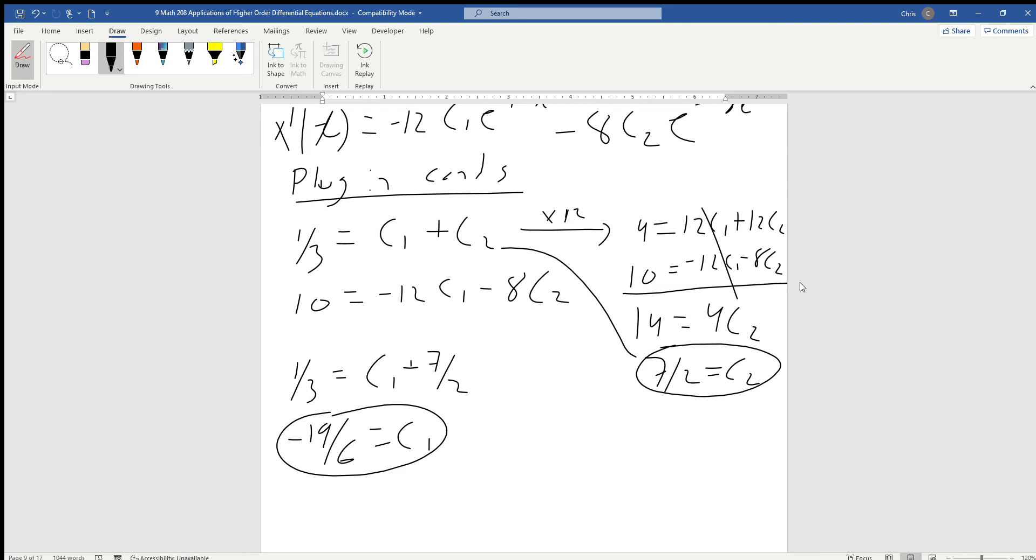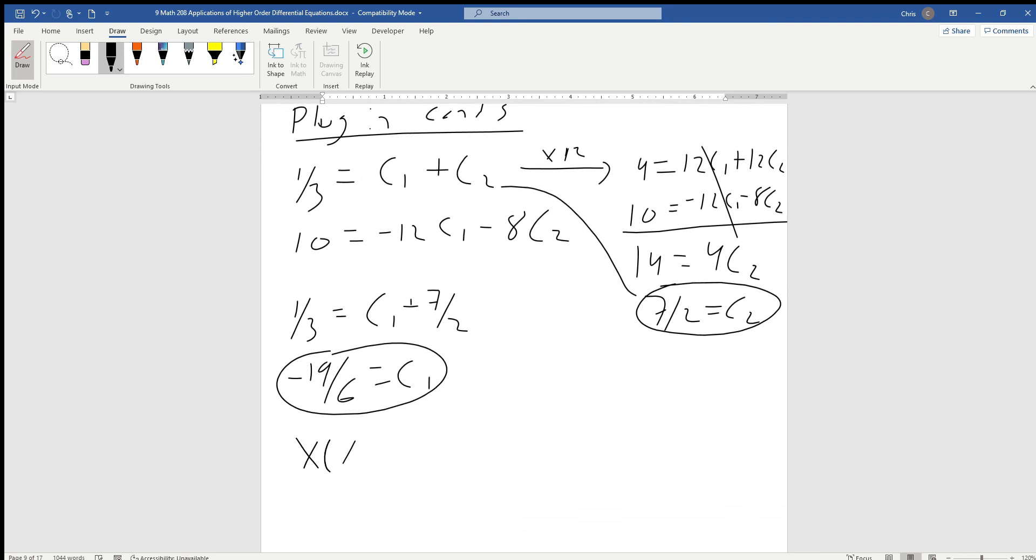Finally, we get our equation of motion. Our equation of motion x of t equals negative 19 over 6 times e to the minus 12t plus 7 halves e to the minus 8t. That's our equation of motion.